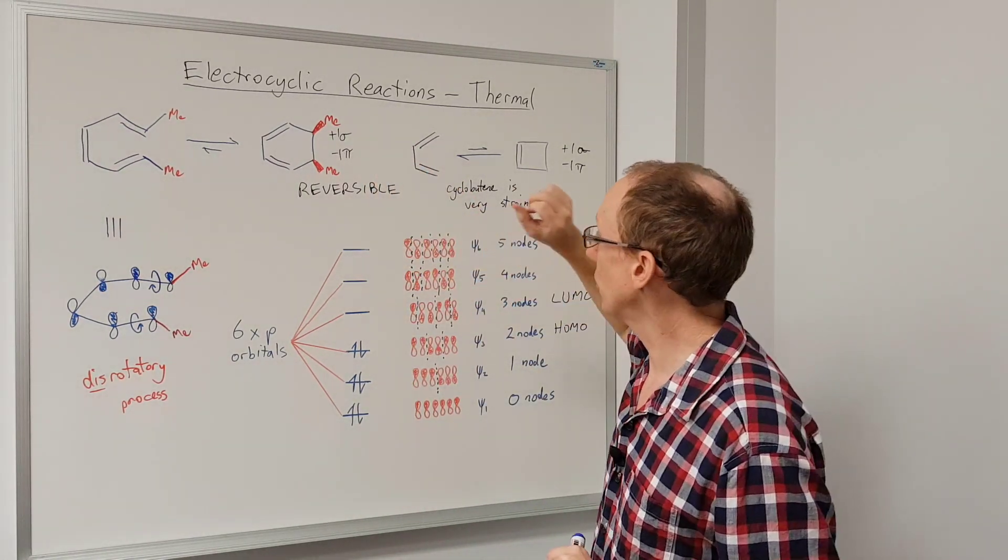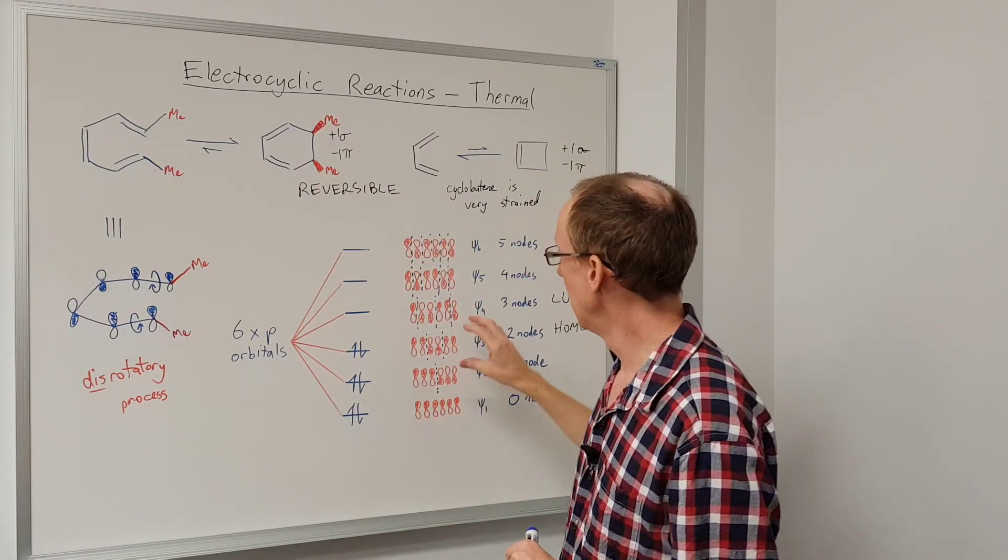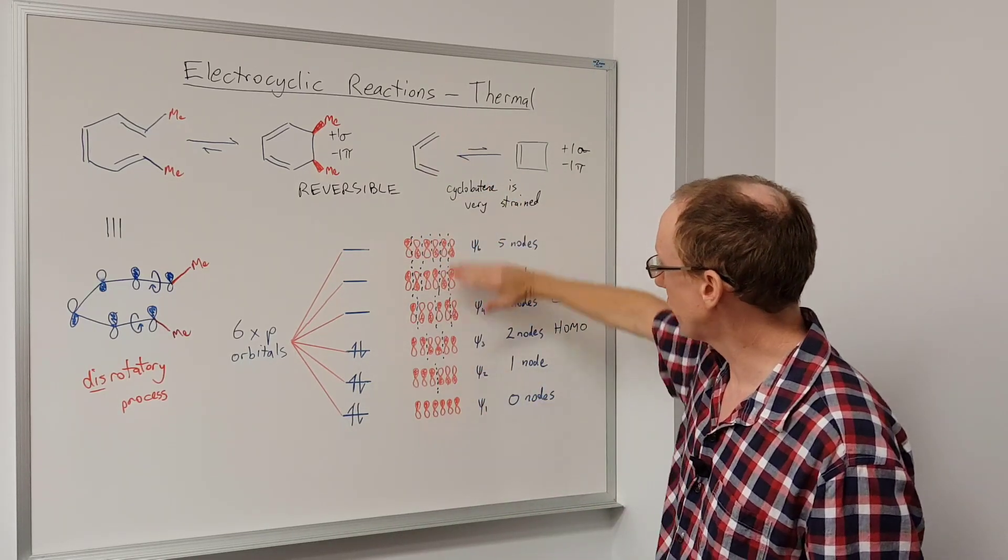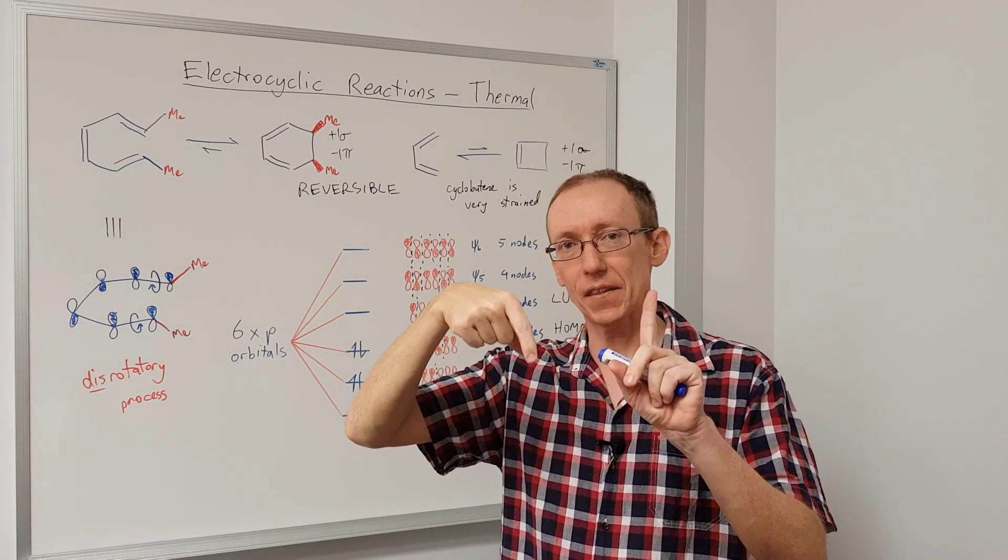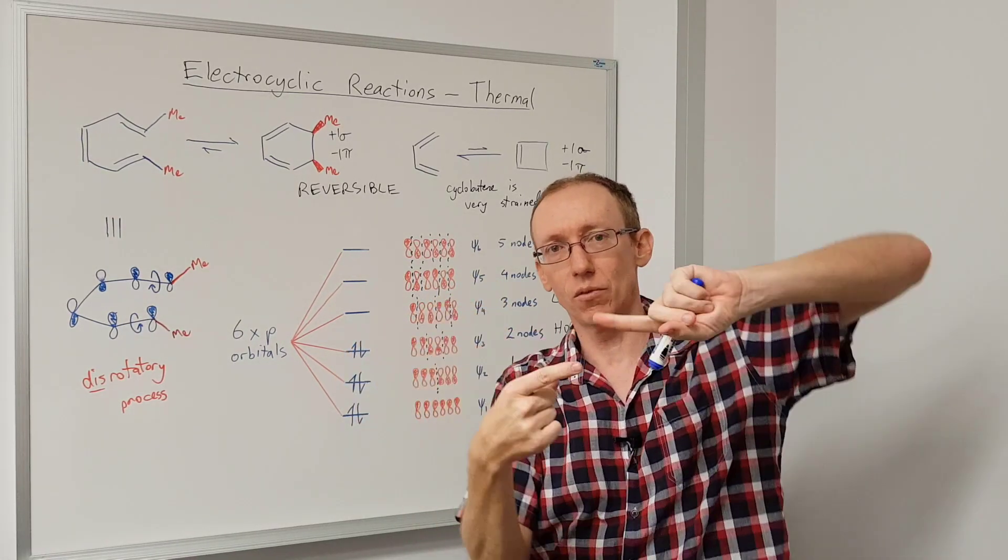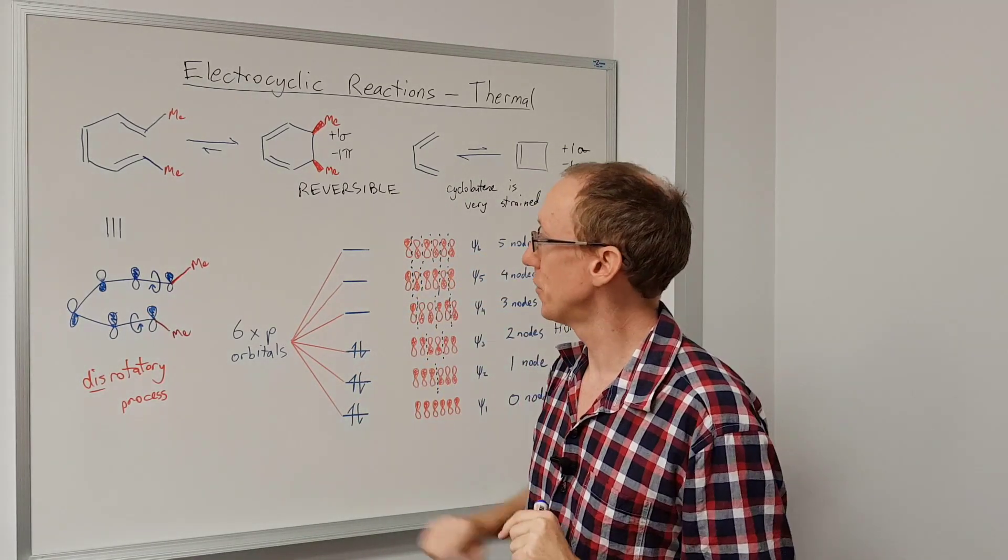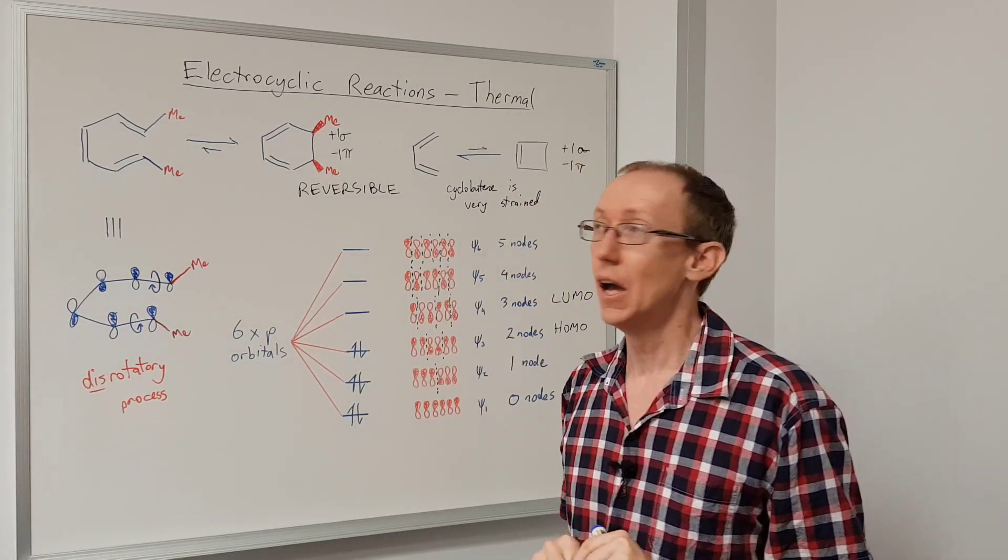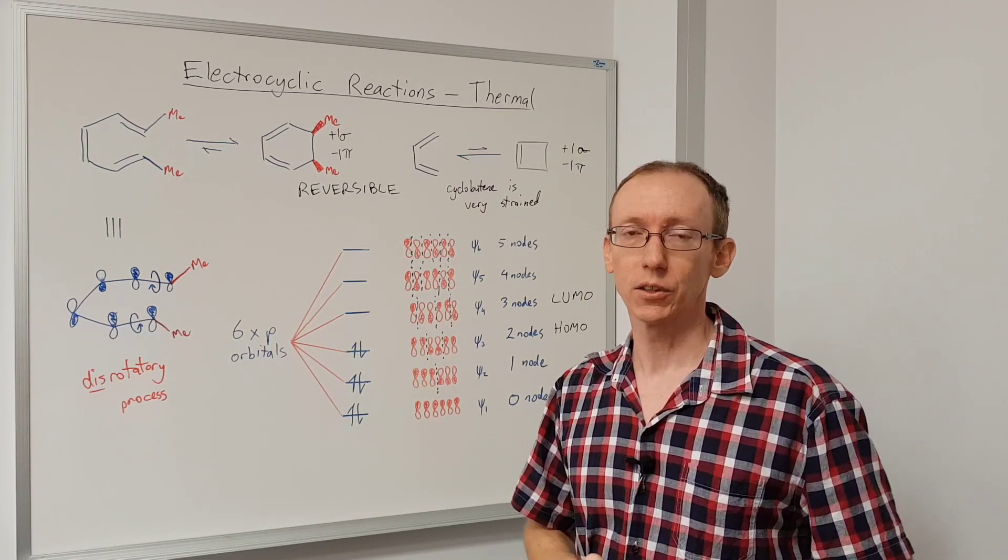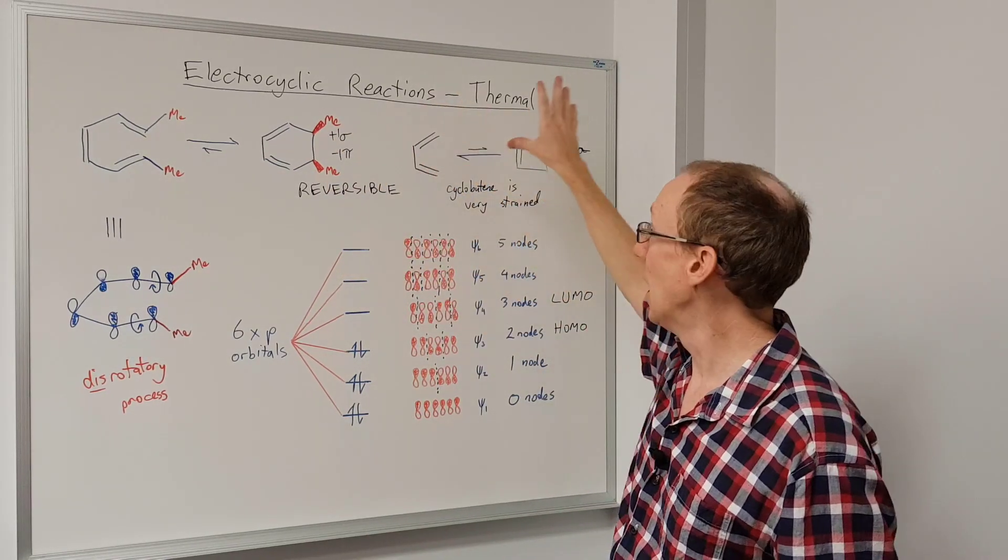So if we have a four-carbon unit with four pi electrons, we go through this, we work out the HOMO, and in that case, we'll find out that the two ends that are needing to overlap are in opposite phase. And so in that case, we're going to rotate in the same direction, and we call it a conrotatory process. So we won't go through that in this video, but I will do another video about the photochemical electrocyclic reaction, which has a different set of requirements. So hopefully that shows you how to look at an electrocyclic reaction under thermal conditions.